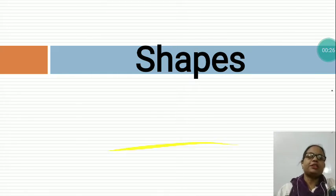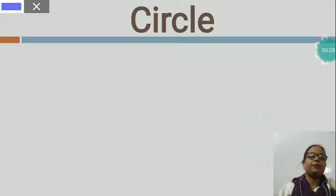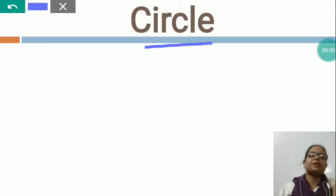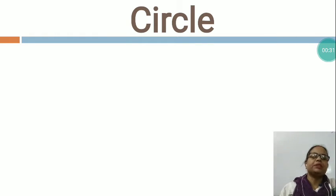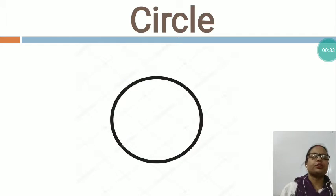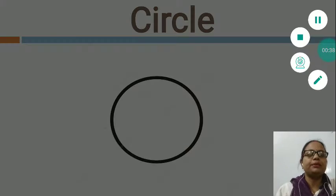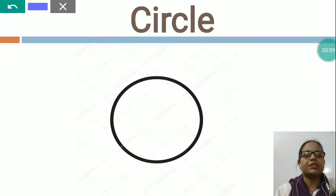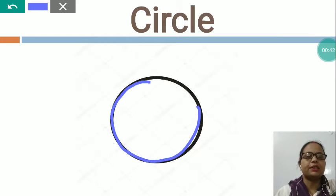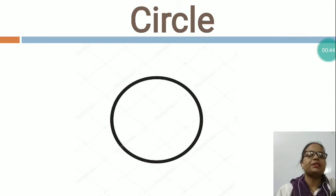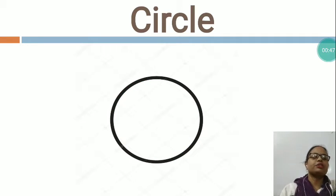So the first is CIRCLE. Now you can see this is the picture of a circle. It is completely round. So which shape is this? Circle. Now I would like to show you some examples of circle.